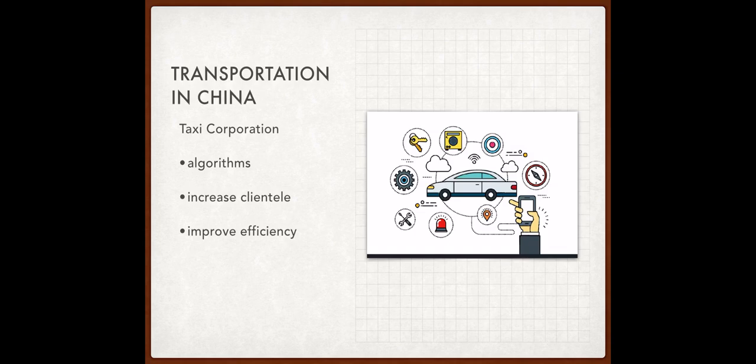A taxi corporation in China is using new infrastructure and collecting algorithms to collect data of the locations most people go to in order to increase their accuracy and time. In the taxi, there is also a camera which ensures safety not only for the customer but for the driver.